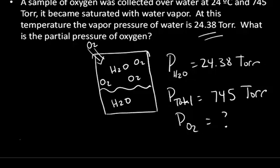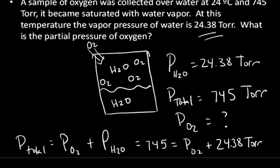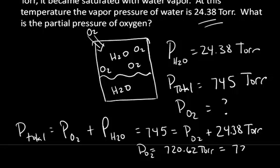From Dalton's law, we know that the total pressure is equal to the partial pressure of the gases in the mixture — so that would be the partial pressure of oxygen plus the partial pressure of the water vapor. The total pressure is 745 torr, equal to the pressure of the oxygen plus 24.38 torr. From this, we can calculate the partial pressure of the oxygen: it's just 745 minus 24.38. The partial pressure of oxygen equals 720.62 torr. If I limit myself to 3 sig figs, the answer is 721 torr.